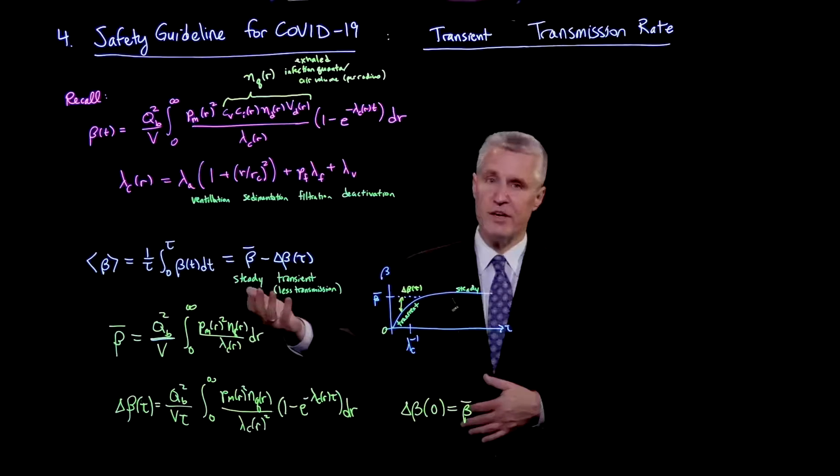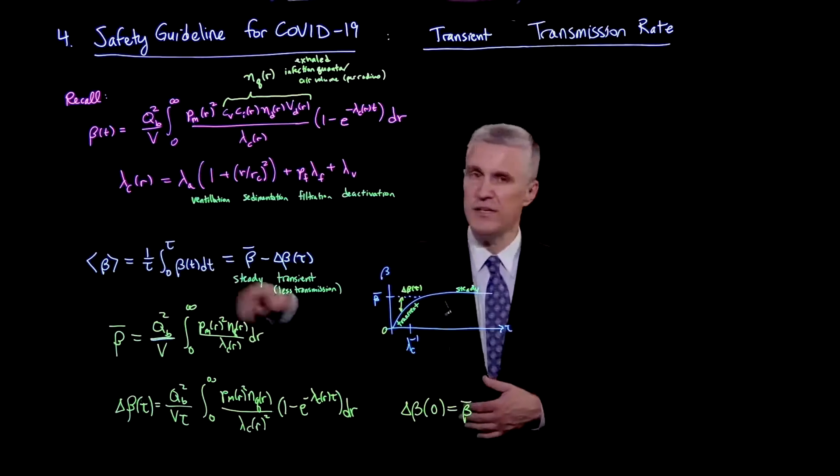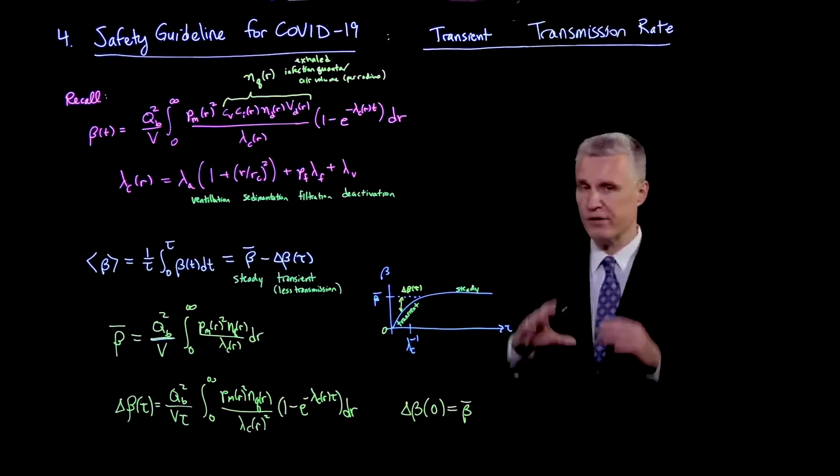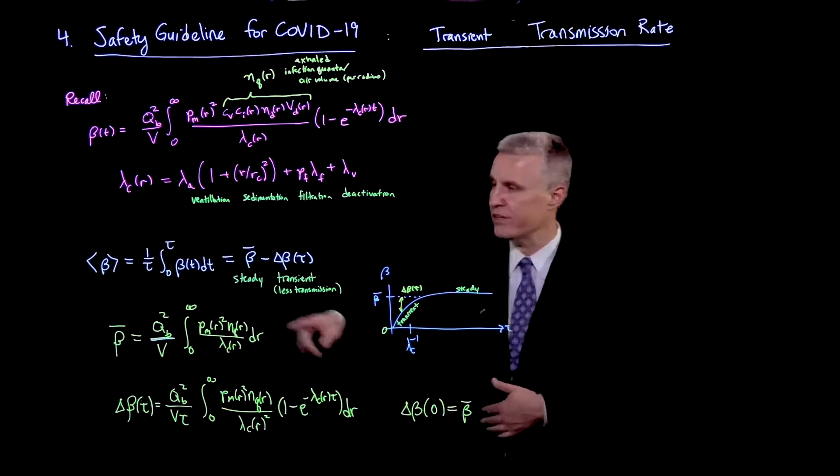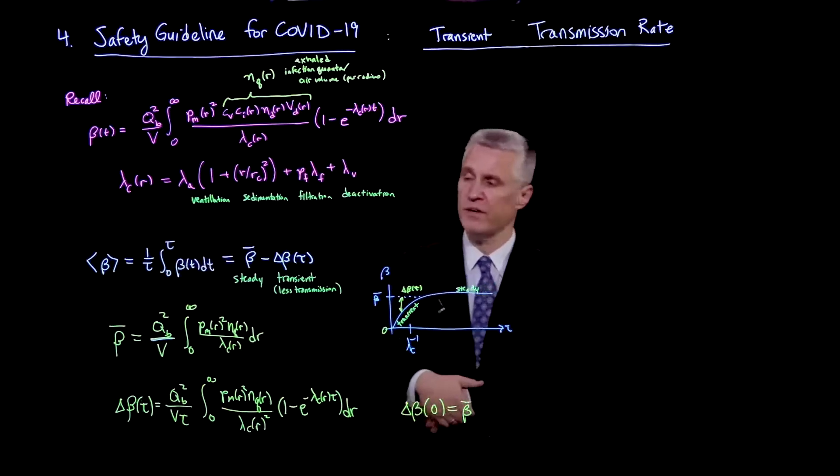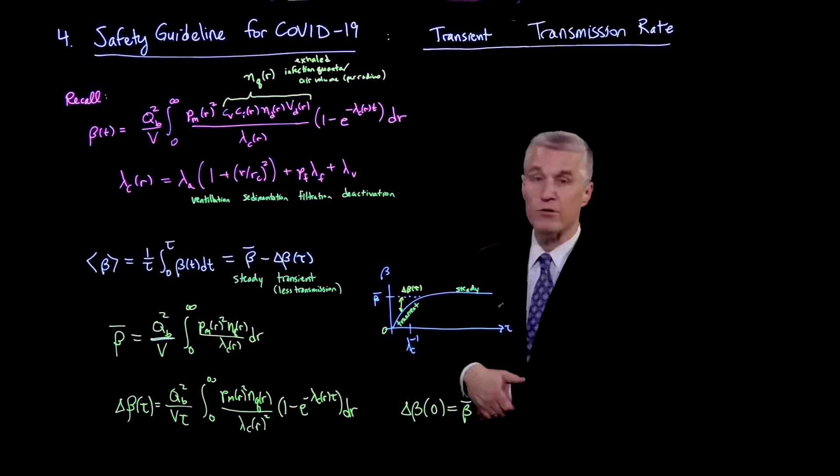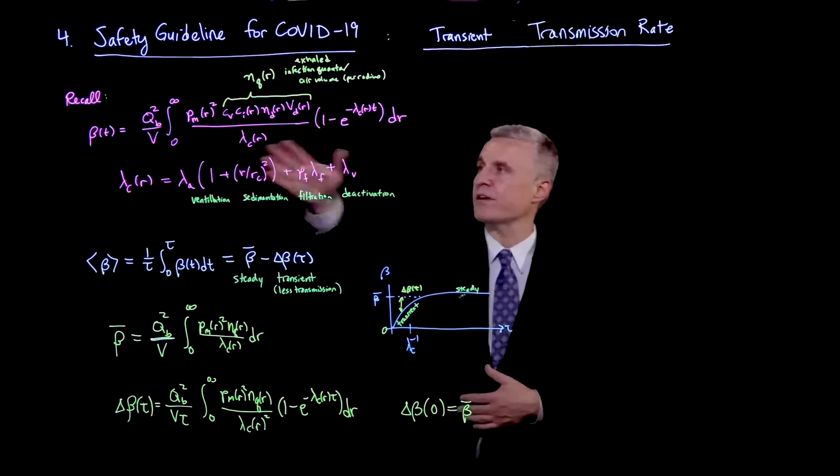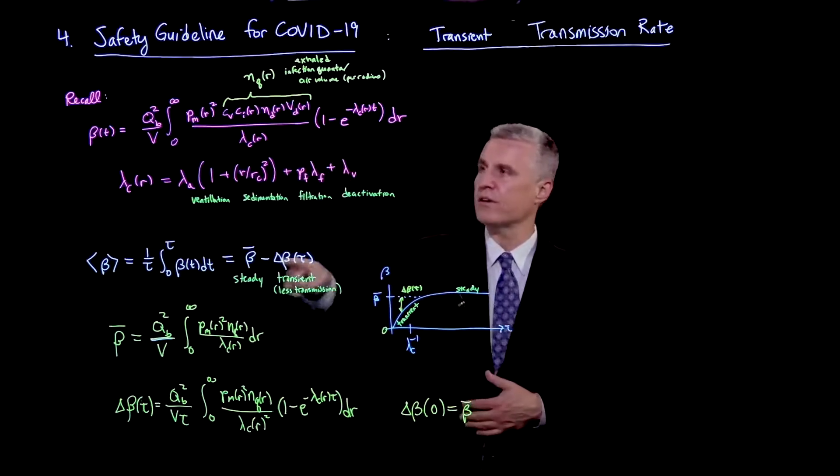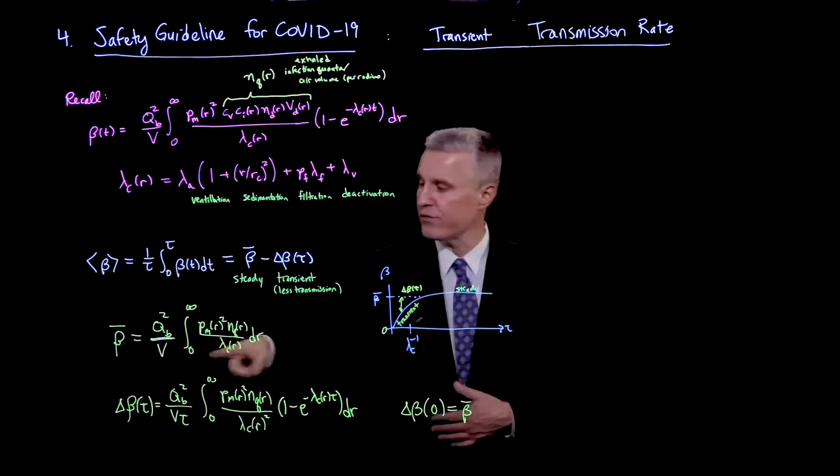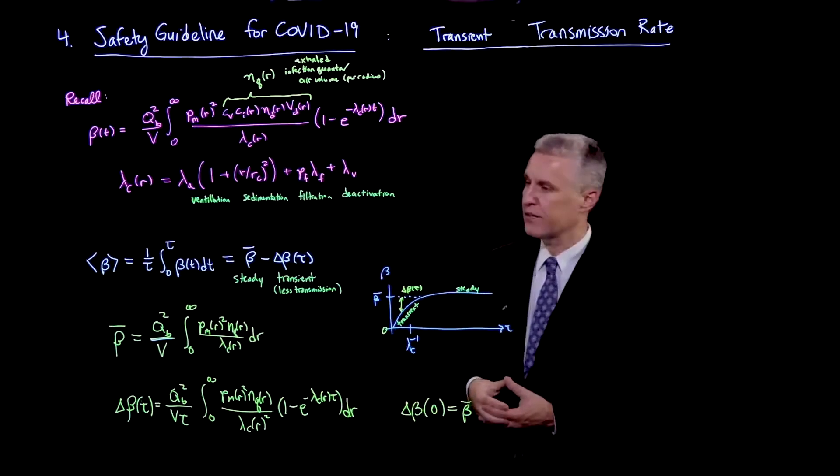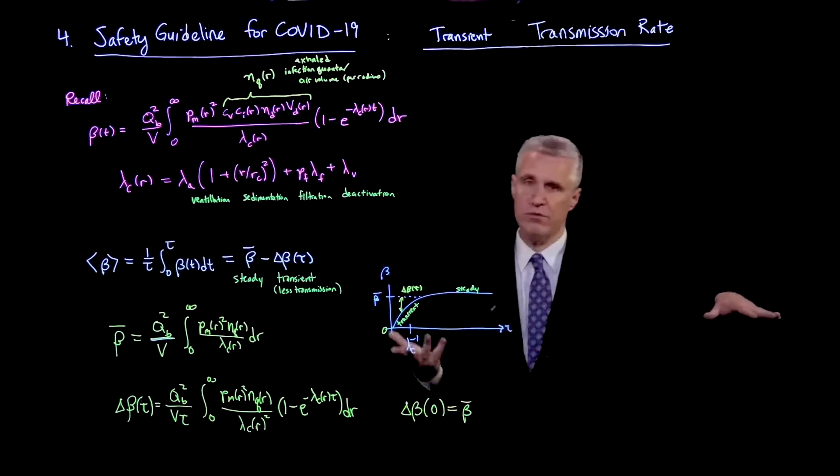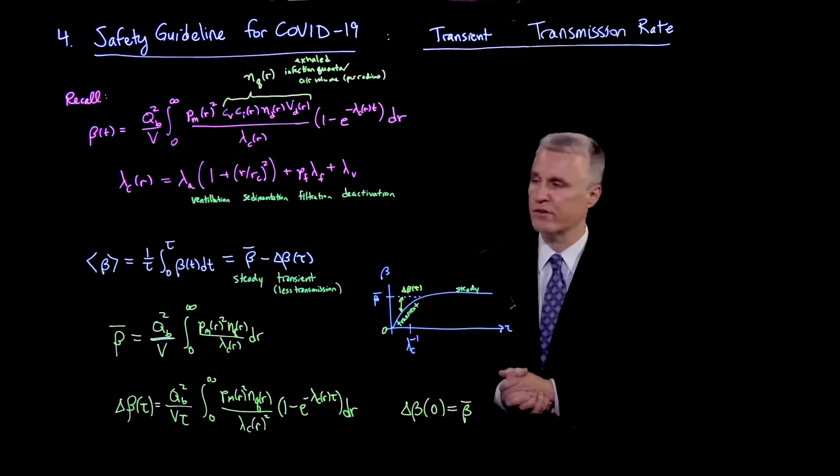And the safety guideline we just discussed has in it the time average beta. So beta with the two brackets, which is the integral in time of beta divided by the time tau. So we can break that into two parts. So we integrate this here. The 1 here gives you a steady state term. And the integral is shown right here. And that's basically ultimately the average that remains.